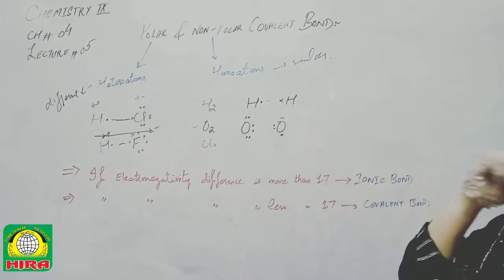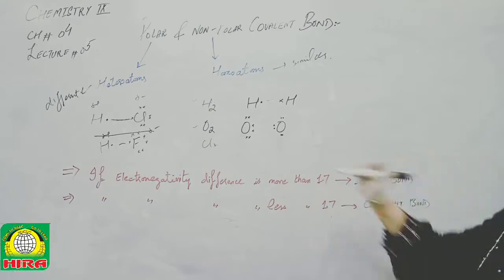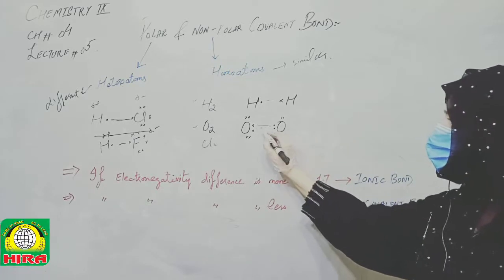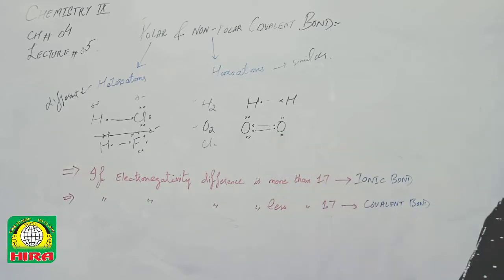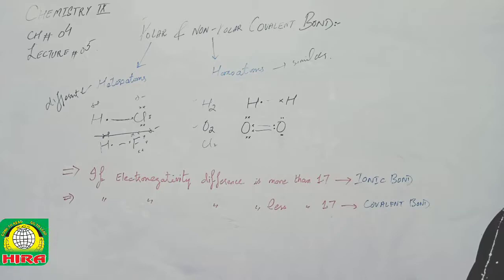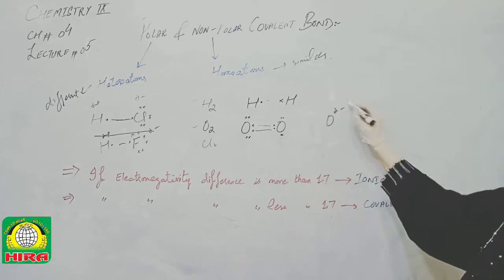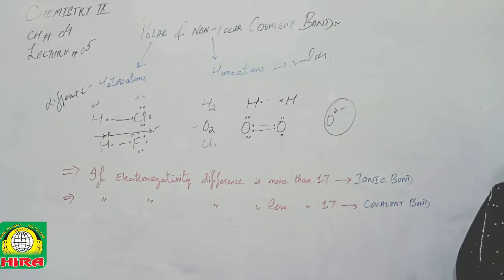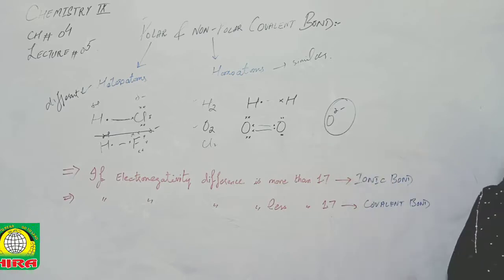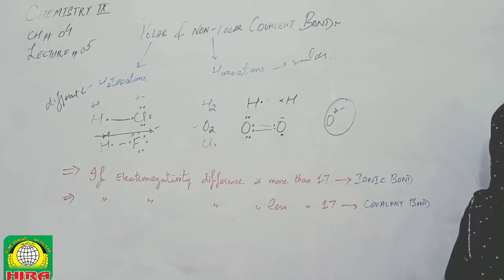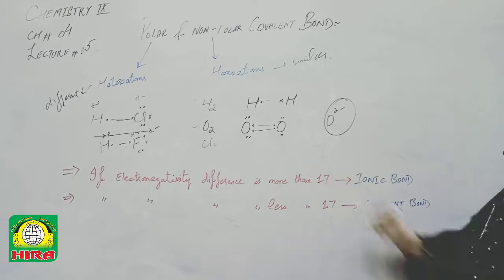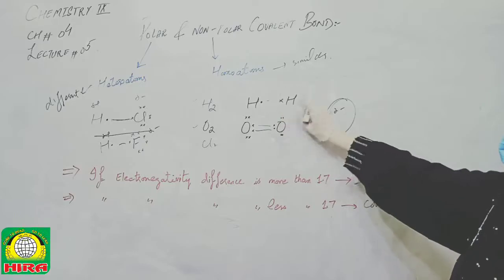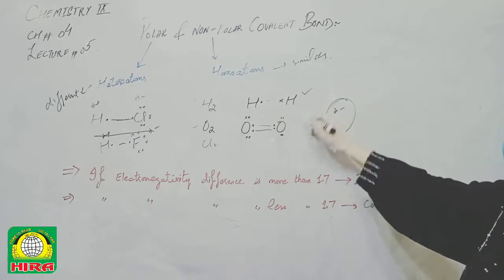For example, consider O2. Each oxygen atom has six electrons in its outer shell. When two oxygen atoms share electrons, both need eight electrons to complete the octet. The two shared electrons are equally attracted by both oxygen atoms. Since both atoms are homo atoms — the same element — the electronegativity is equal on both sides, and there is no charge separation.